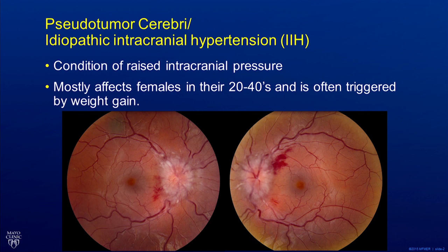Before I introduce MRI elastography, I would like to discuss pseudotumor cerebri, the most common cause of raised intracranial pressure. These patients present with bilateral papilledema, which can be quite severe, as can be seen on this slide. In pseudotumor cerebri, there is no tumor causing raised intracranial pressure, hence the name pseudotumor.